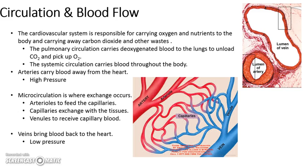Systemic is what we call the circulation whenever blood is being carried throughout the body, whereas pulmonary is what we call the circulation whenever deoxygenated blood is trying to get to the lungs to unload carbon dioxide and pick up oxygen. Think pulmonary — going to the lungs; think systemic — going to the whole system. Systemic is for the blood that already has oxygen.